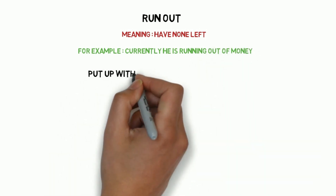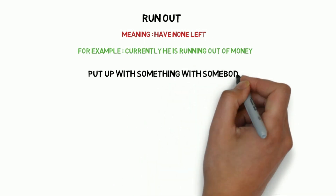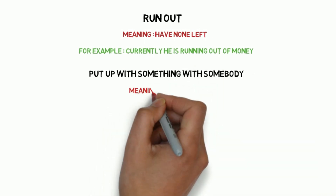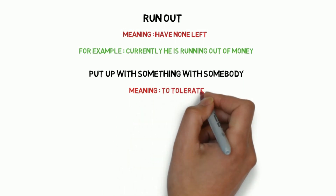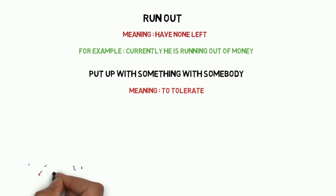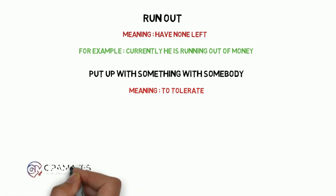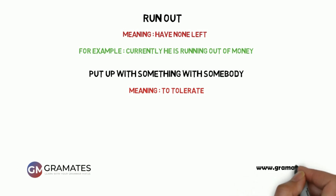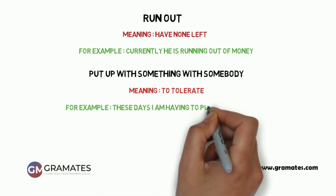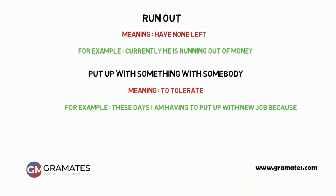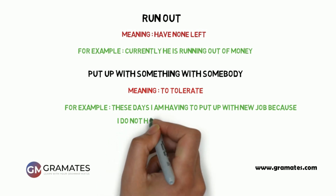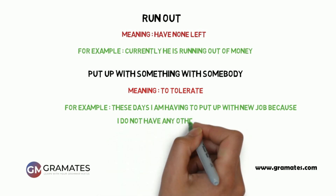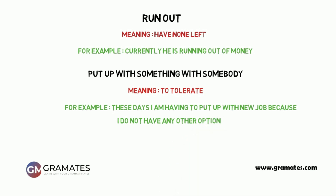Next is 'put up with somebody or something,' which means to tolerate — jab aap kisi ko tolerate, yaani sehen karte ho, bear karte ho. You can use an object with this phrasal verb — whoever you are tolerating. For example: these days I am having to put up with my new job, because I do not have any alternate option — mujhe apni new job ke saath sehen karna pad raha hai, kyunki mere paas koi aur option nahi hai.